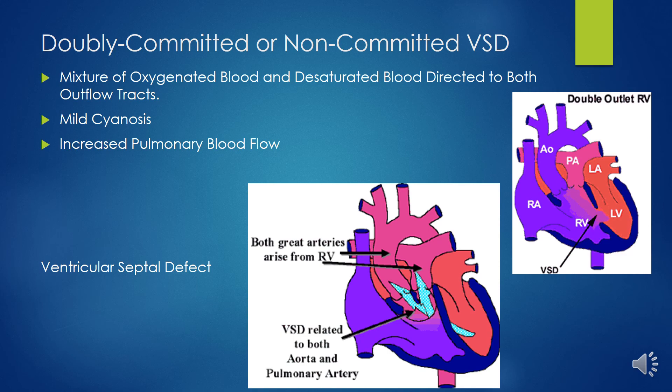For DORV with non-committed VSD, the VSD is typically of the inlet type and intraventricular, making biventricular repair difficult. It can sometimes be accomplished by creating a tunnel from the left ventricle to the aorta. Anatomic contraindications to biventricular repair include multiple muscular VSDs, straddling AV valve tissue, or inability to reliably channel the remote VSD to the aorta, in which case a univentricular strategy may be needed.